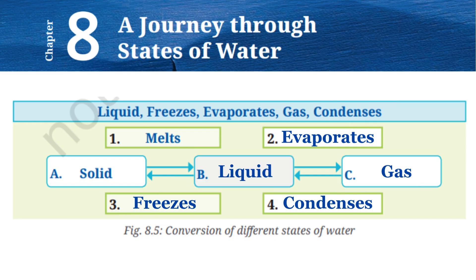So basically, water is a wonderful substance that can exist in three states: solid, liquid, and gas. This chapter helps us understand how water changes from one state to another through processes like melting, freezing, evaporation, and condensation.